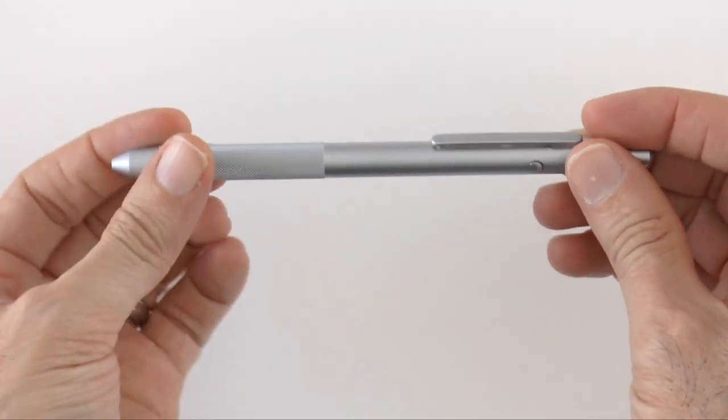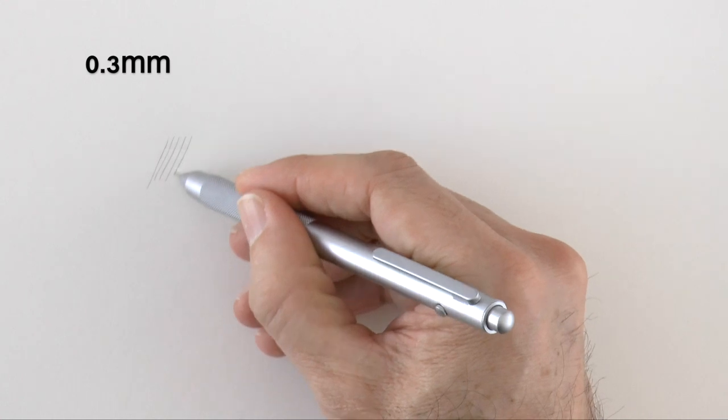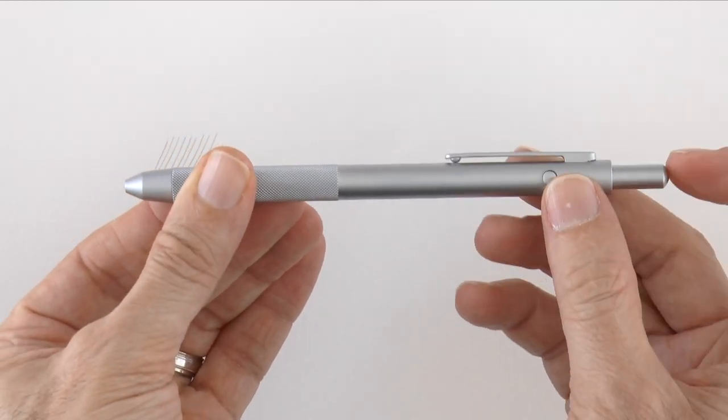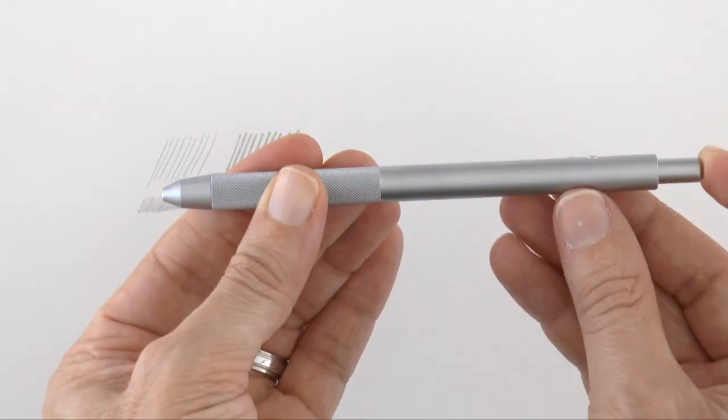This is how it works, simply hold the pencil in this position and push the back button and the smaller and harder leads will come out. By rotating it you can also select a medium or a larger and softer leads.